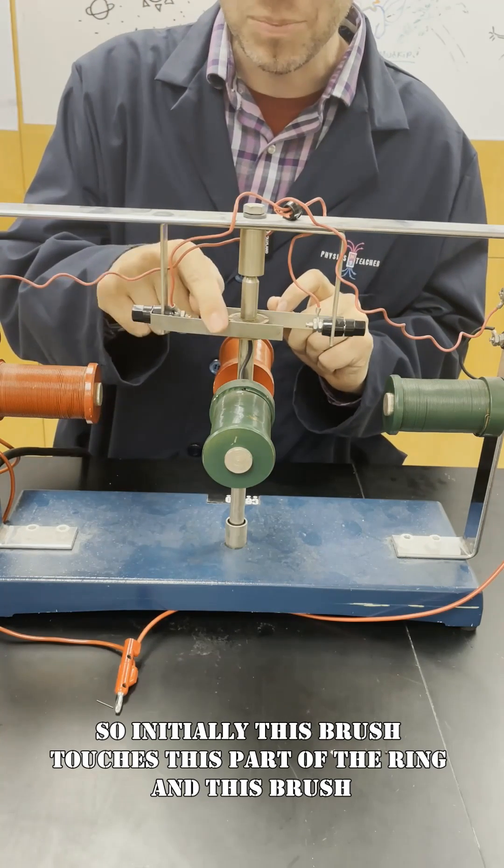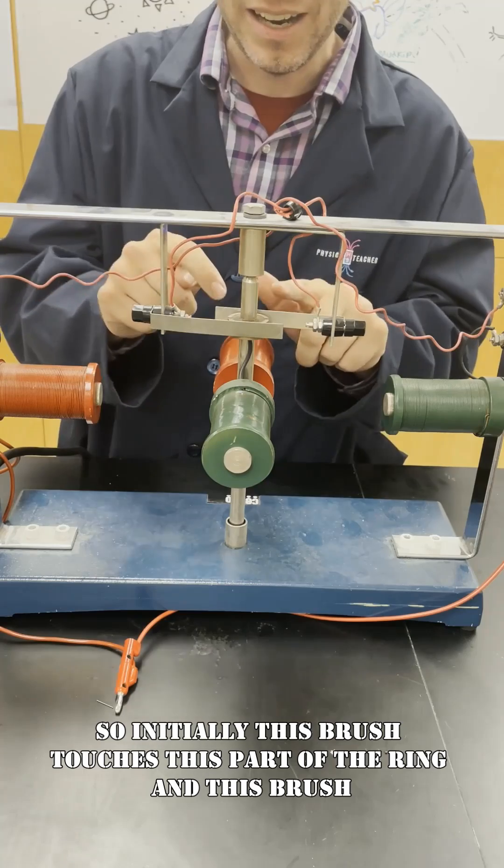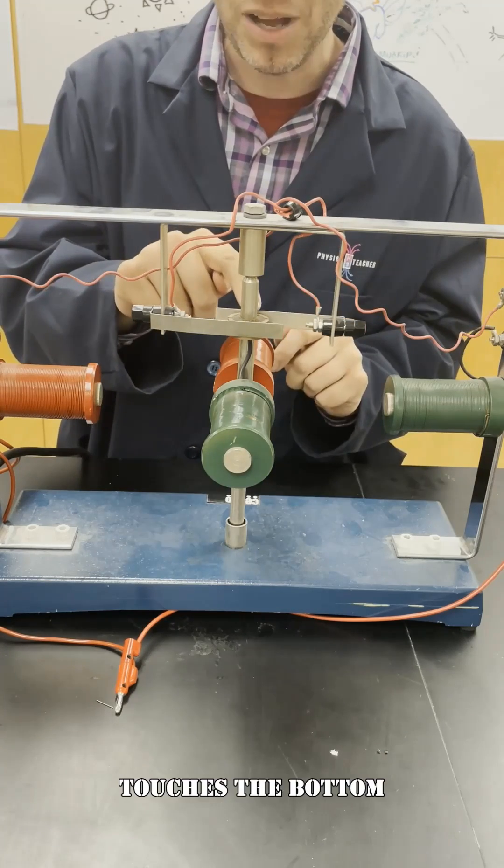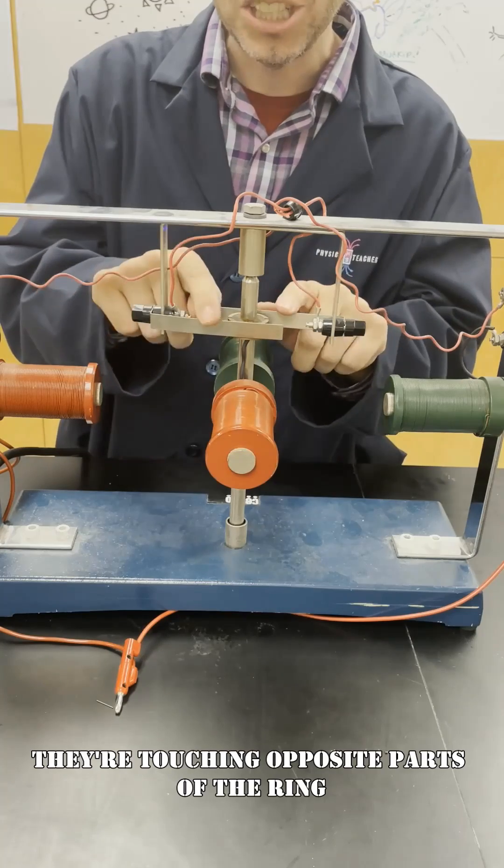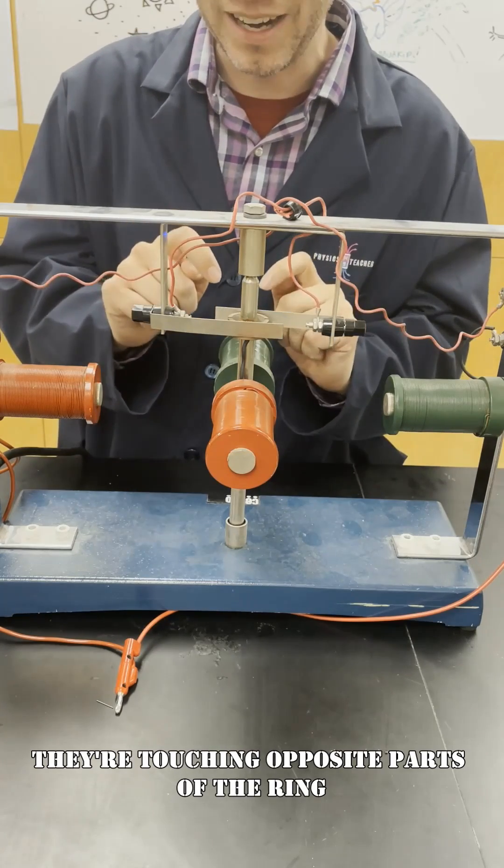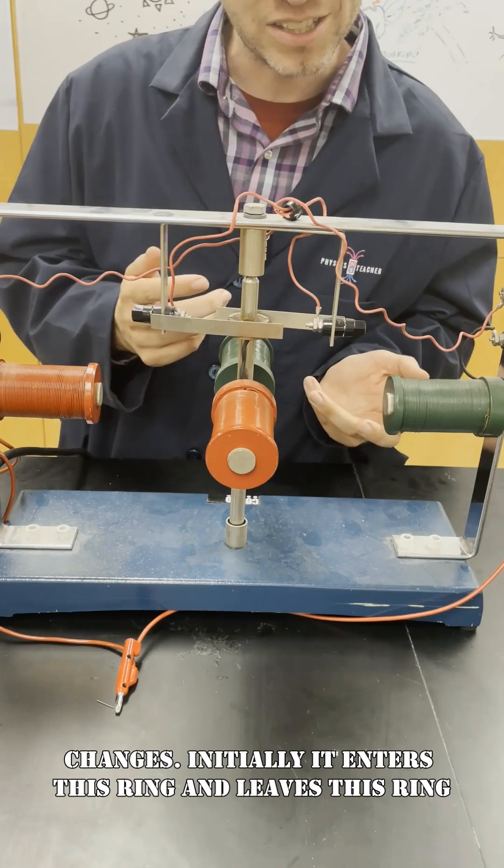So initially this brush touches this part of the ring and this brush touches the bottom. But when we switch they're touching opposite parts of the ring and so the direction of the current changes.